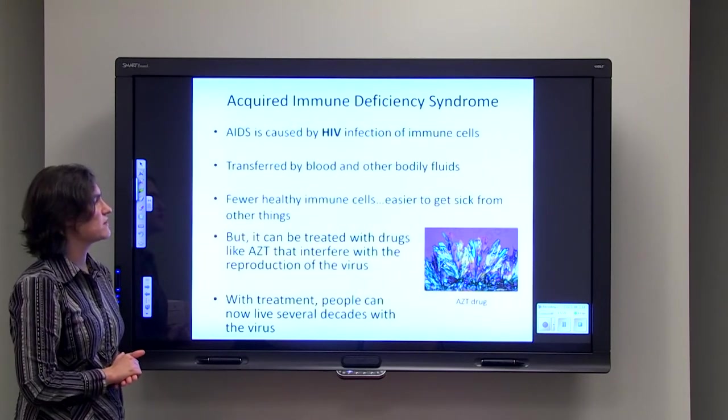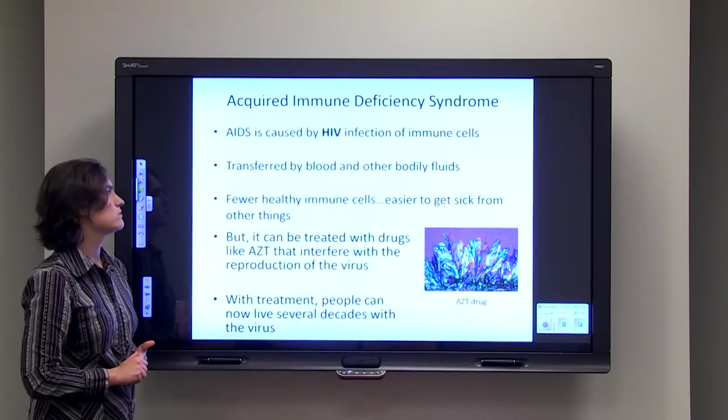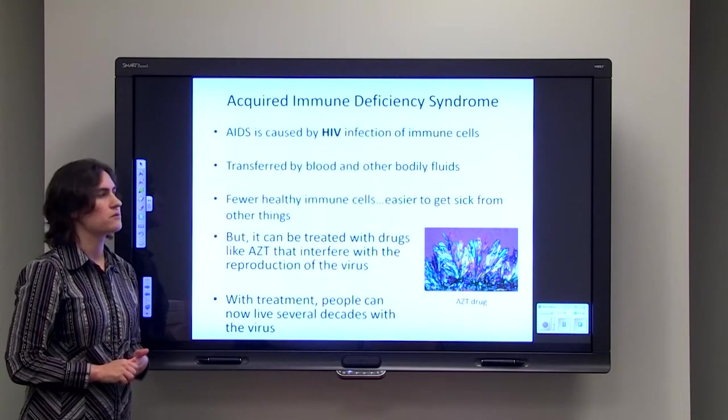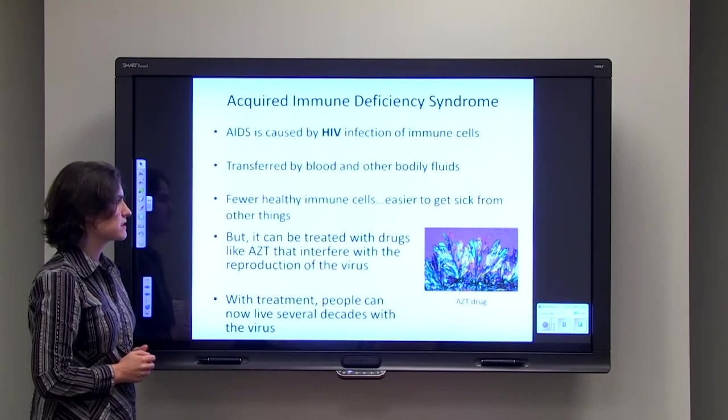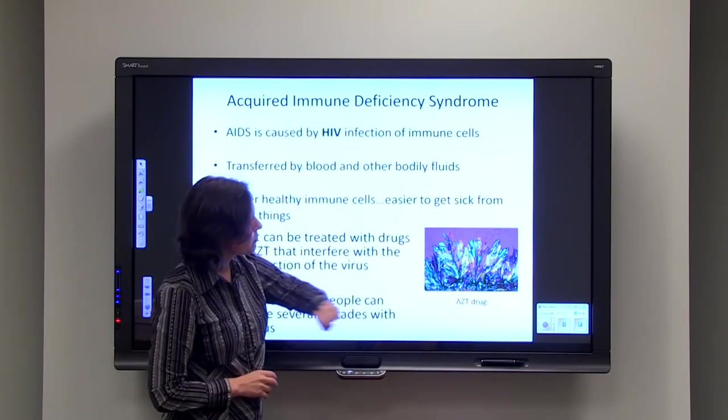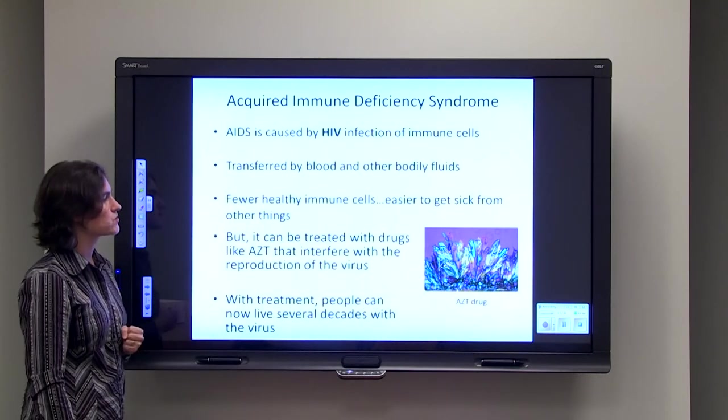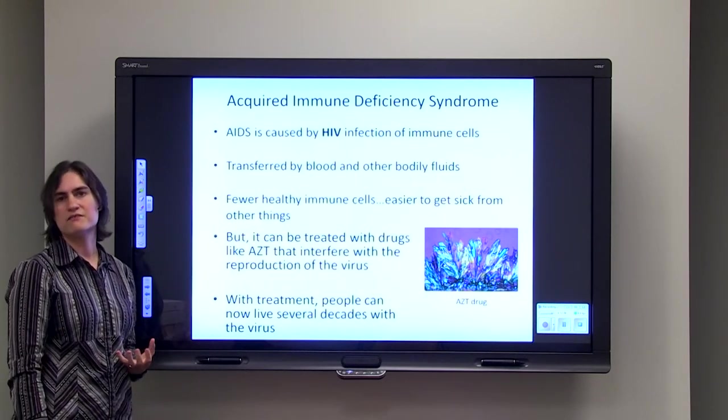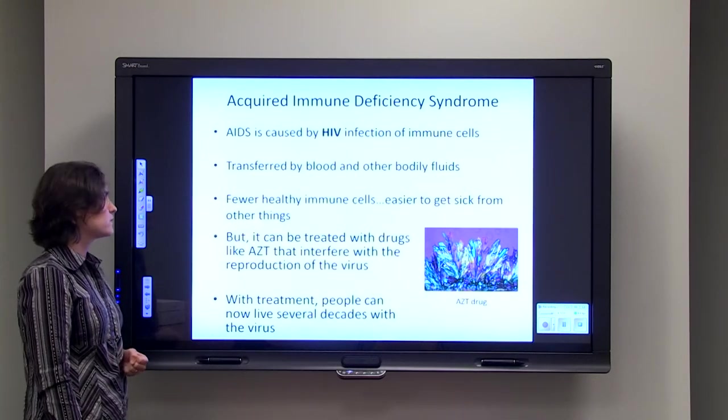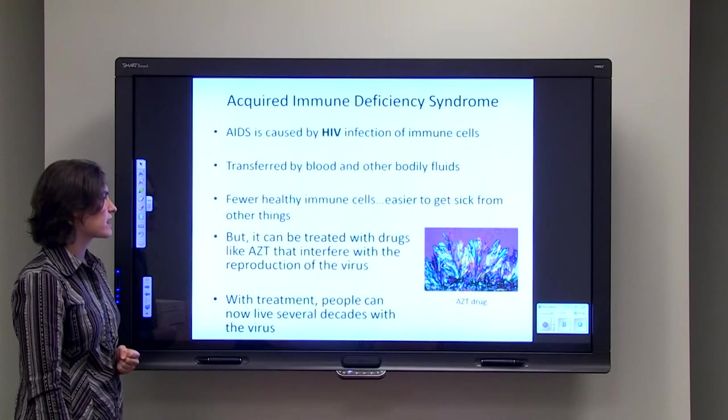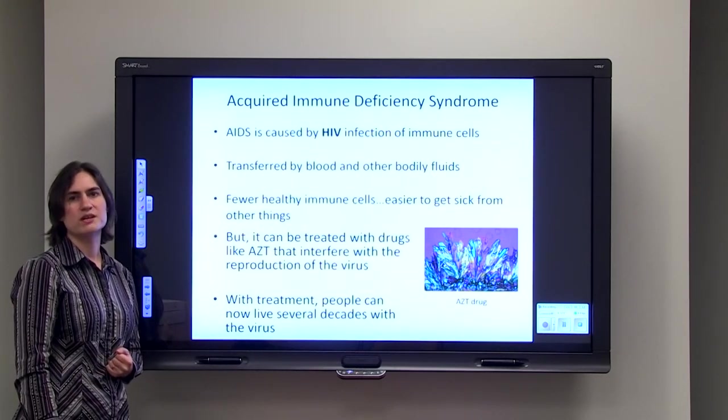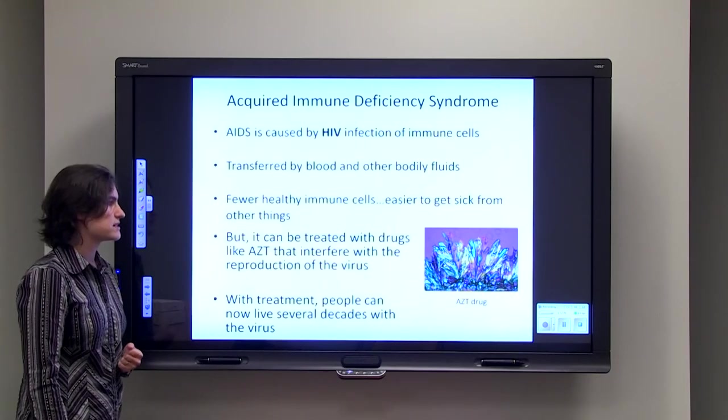But the nice thing about HIV now is that it can be treated with drugs like AZT that interfere with the reproductive cycle of the virus. Here's an example, a beautiful picture of the AZT drug when it's crystallized. The use of AZT plus a cocktail of other drugs now enables people to live with the HIV virus for many decades, so it's more of a chronic disease that's treated instead of a lethal disease.